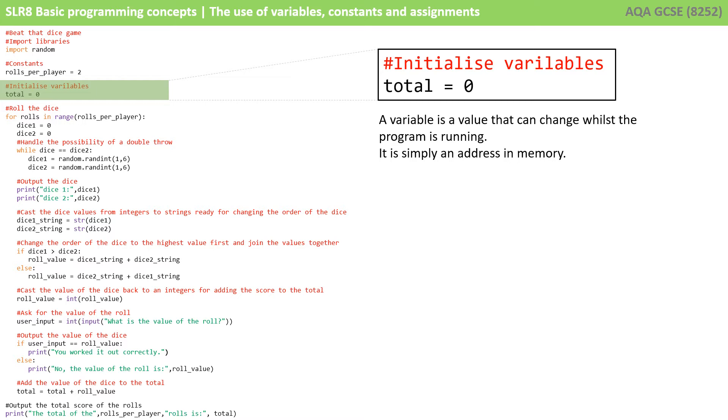Now every variable requires a data type. But in Python, unlike most languages, we don't actually have to declare our data type first. Python works it out based on the value you initially give it. So here we've said total equals zero. So it assigned the data type integer to the variable total.